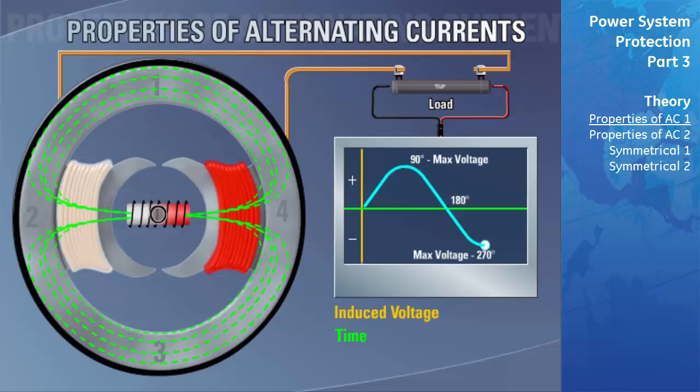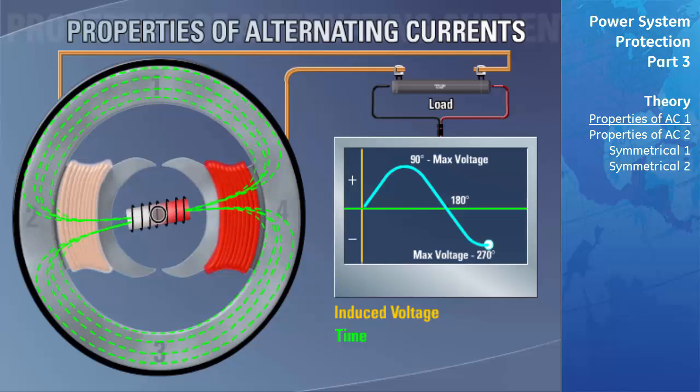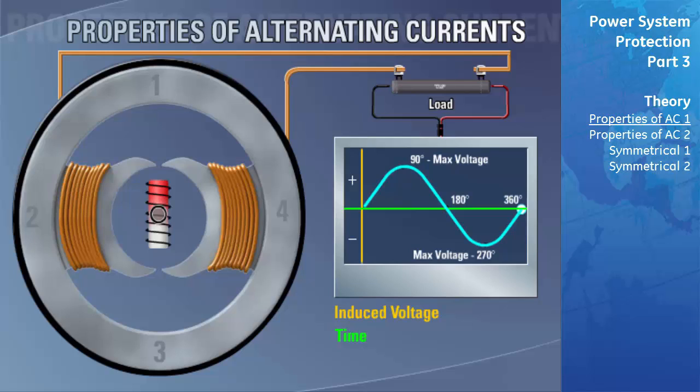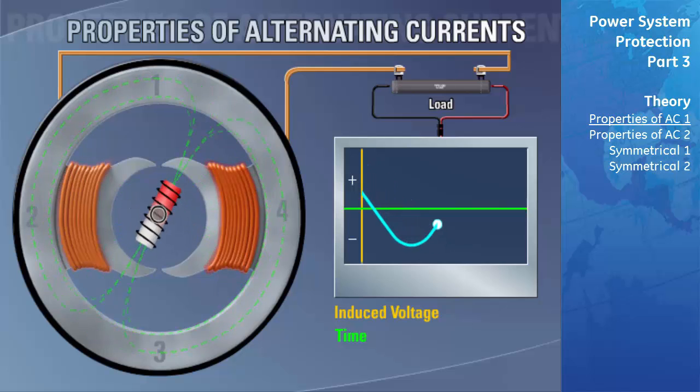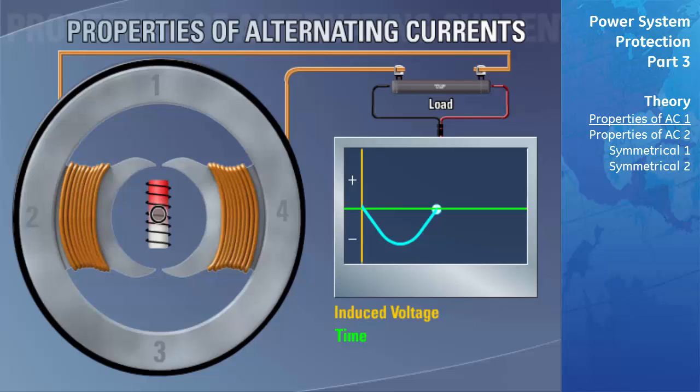As the exciter continues to rotate toward position four, the number of flux lines from the exciter's field flowing through the stator poles again increases, but because flux travels in the reverse direction, the induced voltage is of opposite polarity. The peak of this negative voltage corresponds to the north pole's alignment at position four. As the exciter rotates from position four back to position one, the induced voltage ramps from a maximum back to zero, completing one cycle of the waveform.